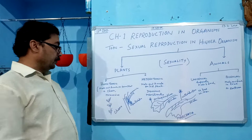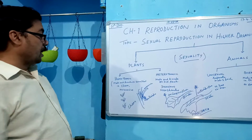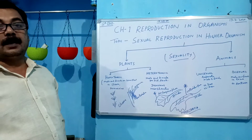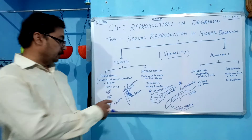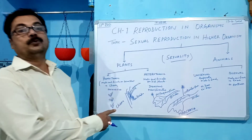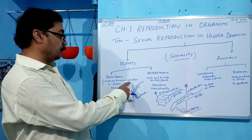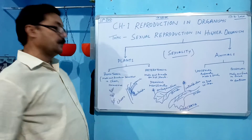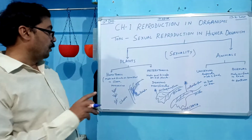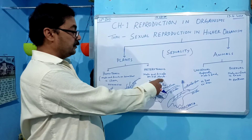Homothelic refers to a plant, for example Chara, in which male and female are found on the same plant. Chara is from the algae group. In that plant, male and female reproductive structures are found on the same plant. That is known as homothelic.